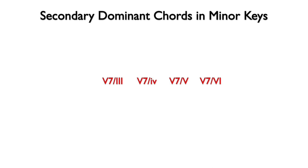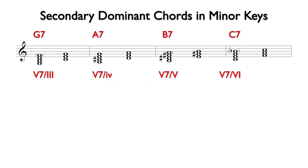These Roman numerals will transfer to any minor key. A secondary dominant chord is always found a perfect 5th above its chord of resolution. Here are the secondary dominants and their chords of resolution in the key of A minor. Notice that with the exception of 5-7 of 4, each of these chords could be a triad or a 7th chord.